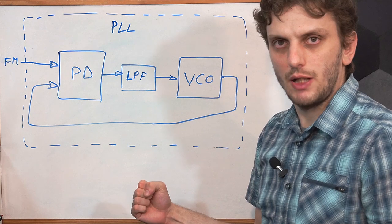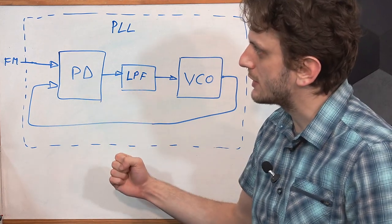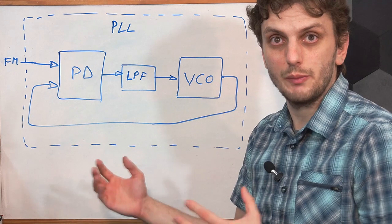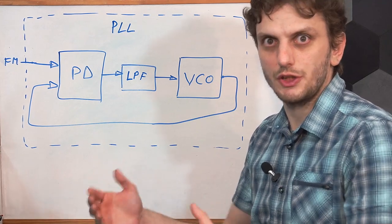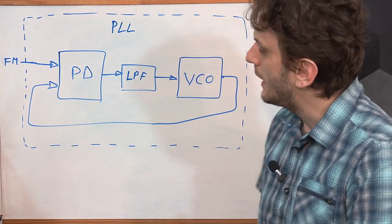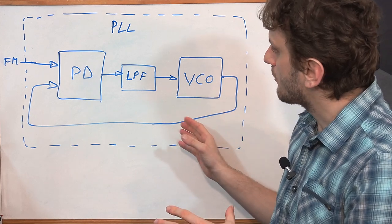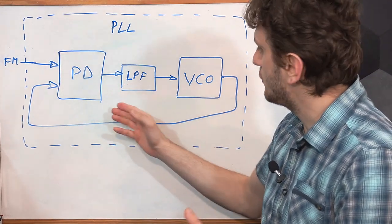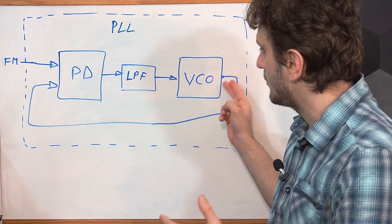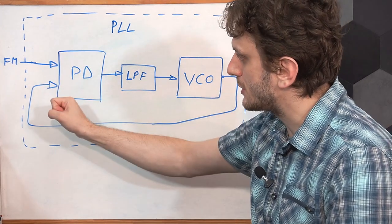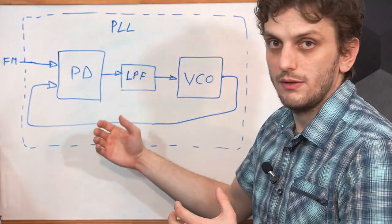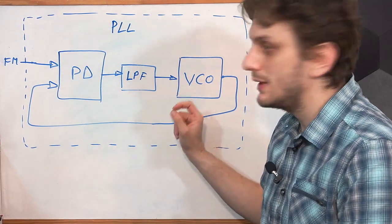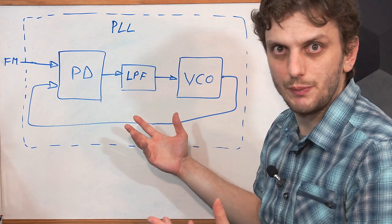Now if we remember how the initial frequency modulated signal was created, we needed to take our message and drive a voltage controlled oscillator with it. The only way to keep the loop stable is if the output frequency of our VCO is the same as our input frequency, and the only way to obtain that is if our driving signal is the same as our initial message.